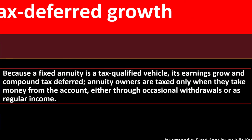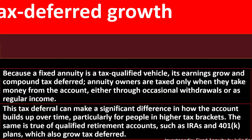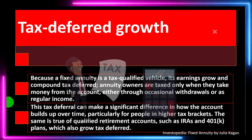Tax deferred growth: because a fixed annuity is a tax deferred vehicle, its earnings grow and compound tax deferred — one of the key benefits, similar to putting money into an IRA or 401k. Annuity owners are taxed only when they take money from the account, either through occasional withdrawals or as regular income. This tax deferral can make a significant difference in how the account builds up over time, particularly for people in higher tax brackets.